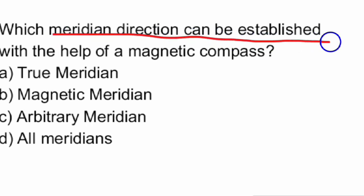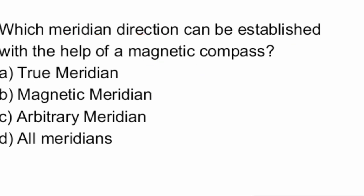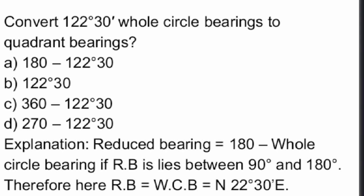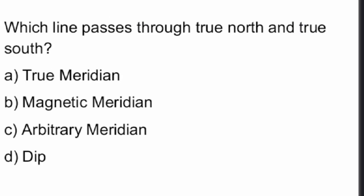Which meridian direction can be established with the help of a magnetic compass? It is the magnetic meridian. These are the questions related to Town Planning and Building Overseer. That's all for this video, thank you.